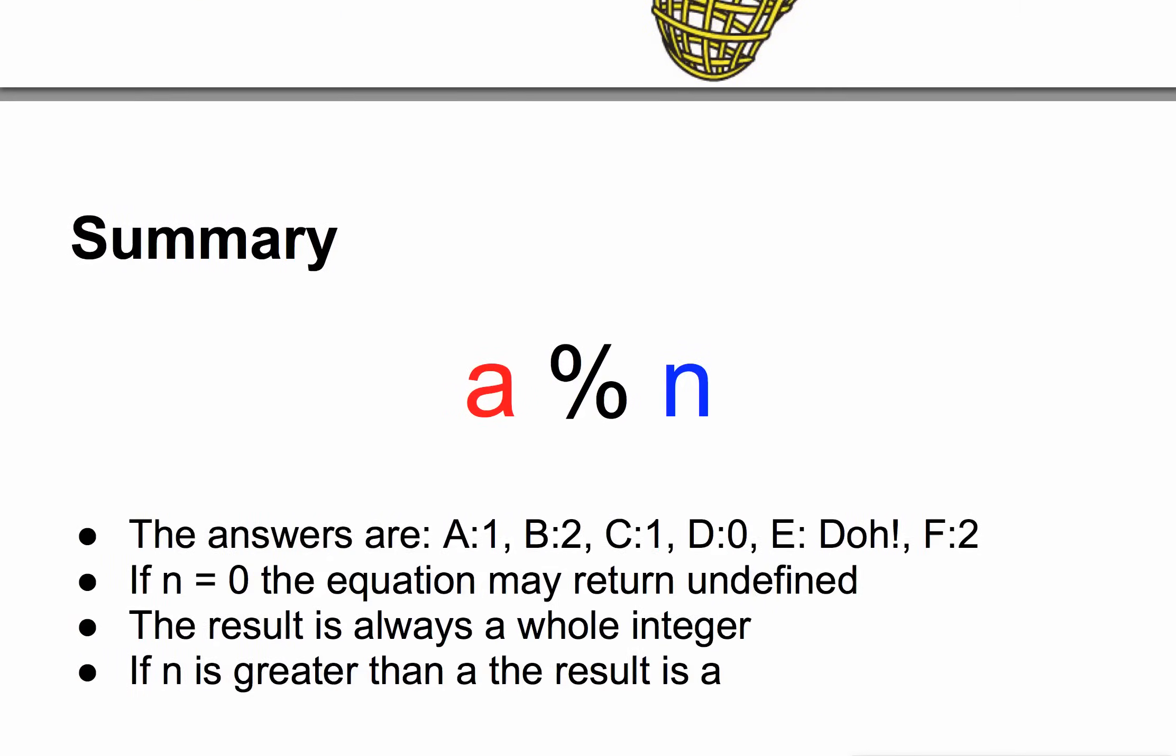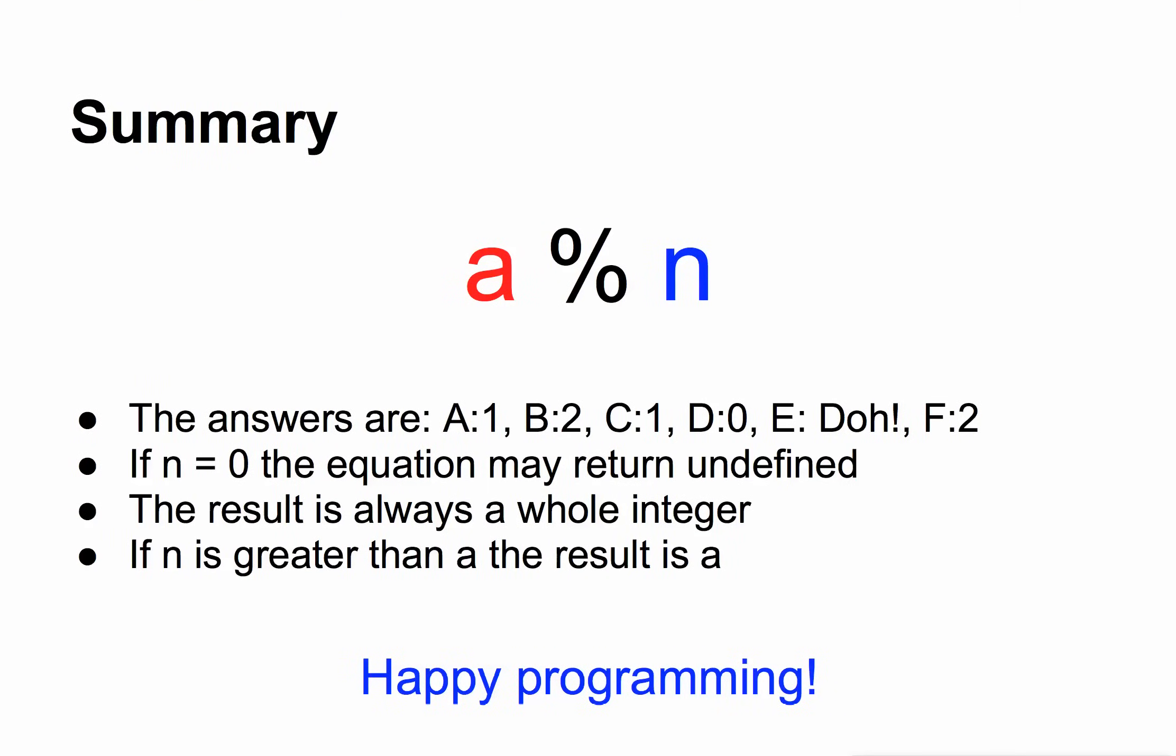And so, all this is summarized on the last slide here, that answers are repeated here. If n equals zero, the equation will turn undefined in Python, and the result will always be a whole integer, and that if your n is greater than your a, the result is a.